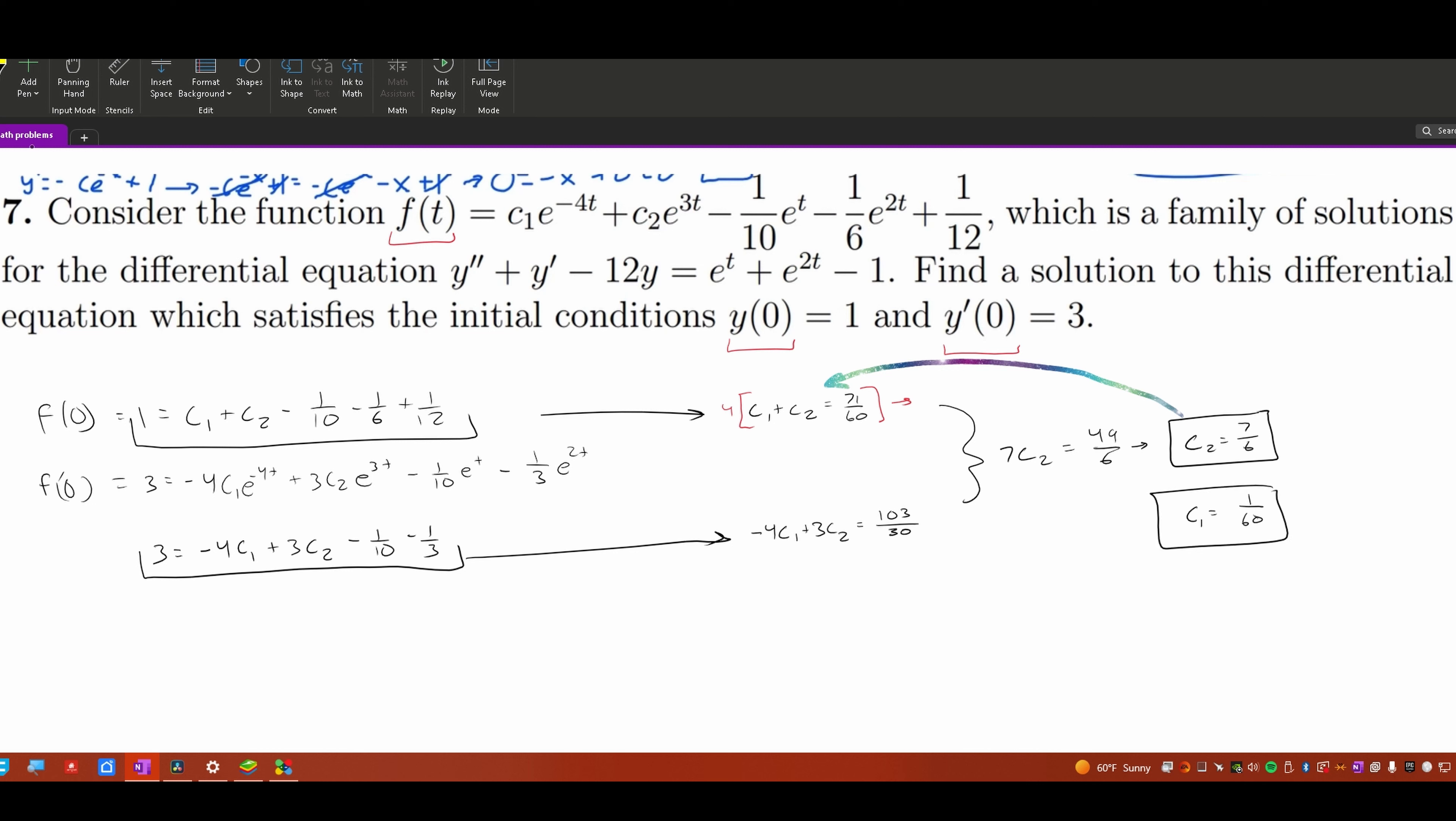So now that we have our two values, all we need to do is plug them back into our function. So we're not really doing anything with the middle part right here. This is kind of step one, and now let's go to step two, where we plug in for f(t). And f(t) is going to now be equal to, we'll just have a e^(-4t) over 60, plus a 7 times our e^(3t) over 6,